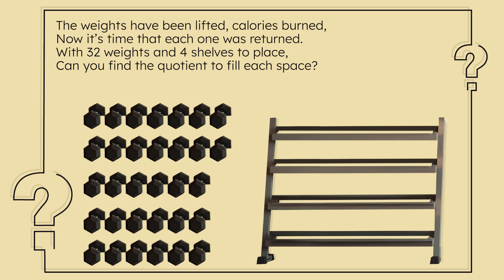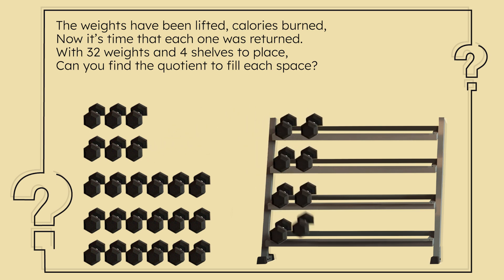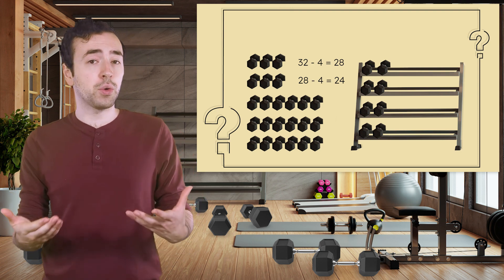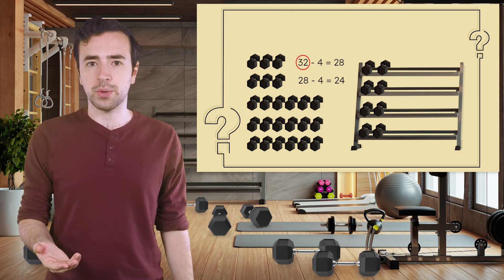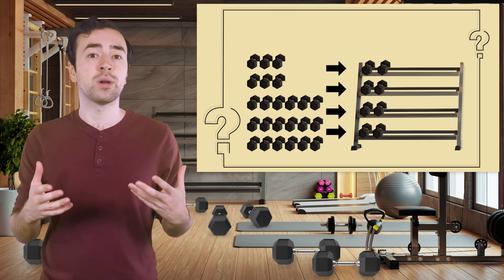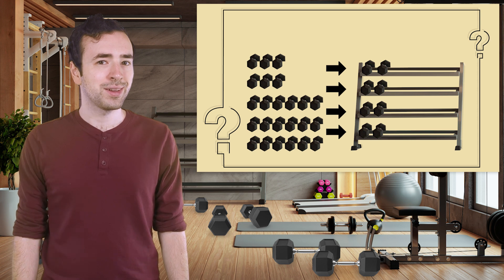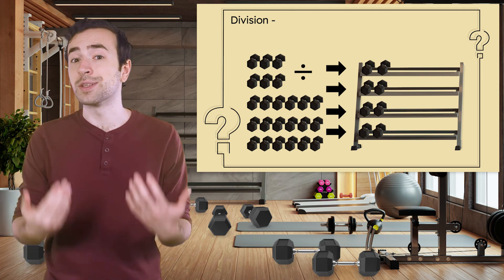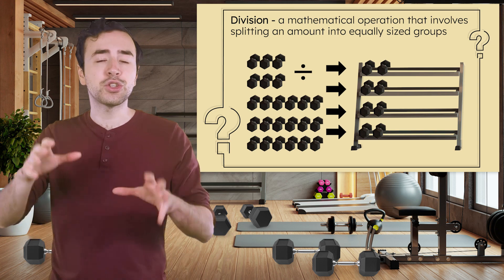We could place the same number of weights on each shelf — four here, four more here, and so on. It's like we're repeatedly subtracting four weights from our 32 total weights each time. How is this problem similar to the tile puzzle in the workshop? It's another repeated operation. But what makes this problem different? Instead of adding equal groups to find a total like we did with the tiles, we already know the total here — 32 — and we need to split 32 into four equal groups. Division is really just a faster way of doing repeated subtraction. It's an operation that involves splitting an amount into equally sized groups.